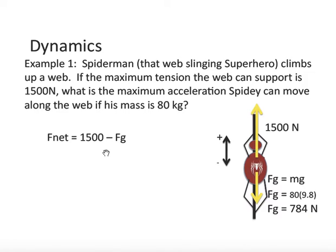And so, we start off with an Fnet statement. Fnet equals 1,500, subtract gravity. 1,500 is positive, because it points upwards. Gravity is negative, because it points downwards. Gravity opposes the motion in this situation. What is Fnet equal to? According to Newton's second law, Fnet is equal to MA. Substituting 80 for the mass, and now solving for acceleration, we get a value of 8.95 meters per second squared.